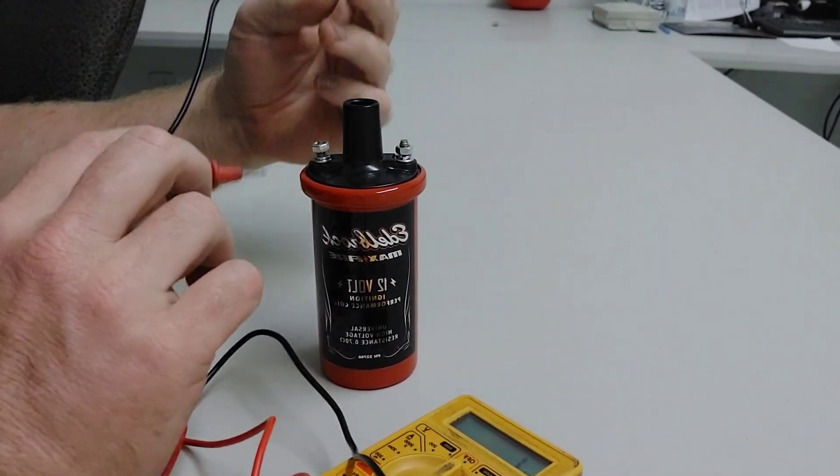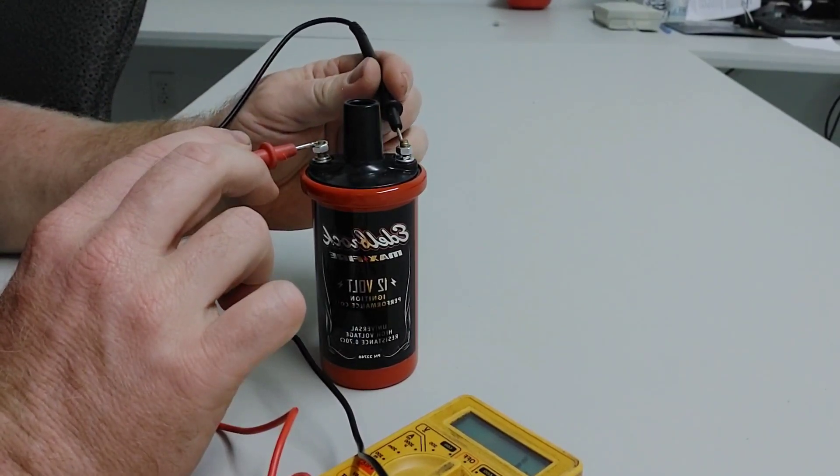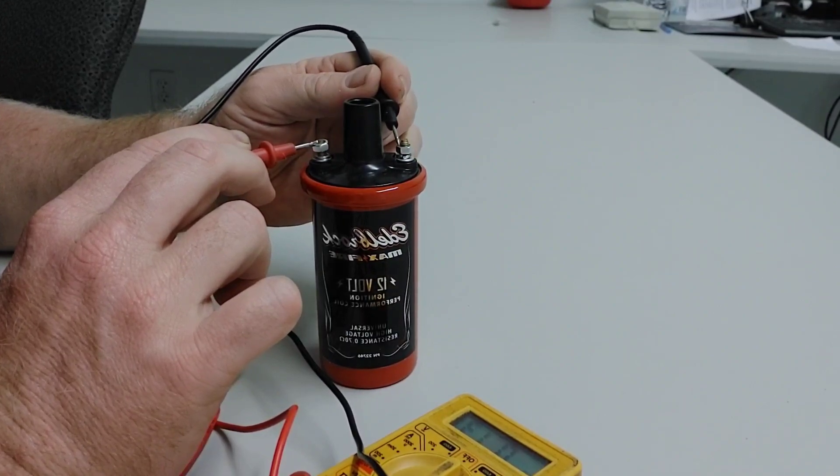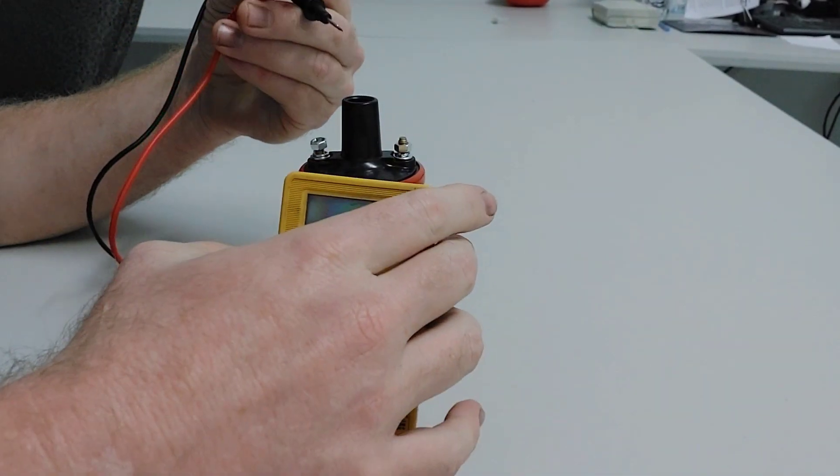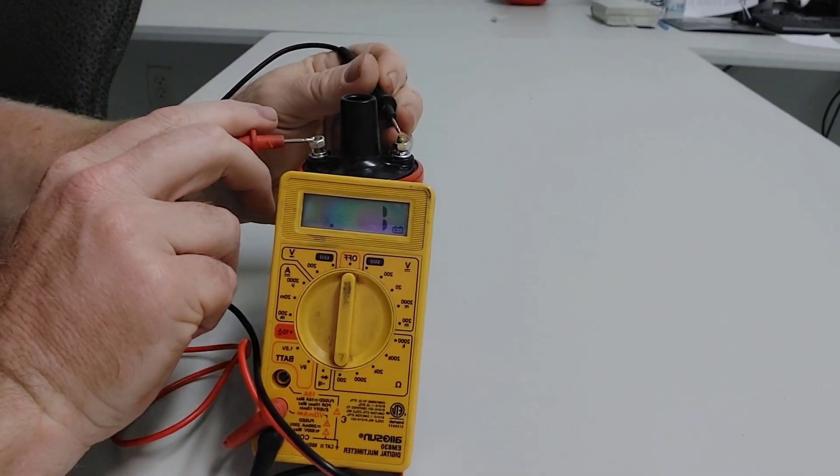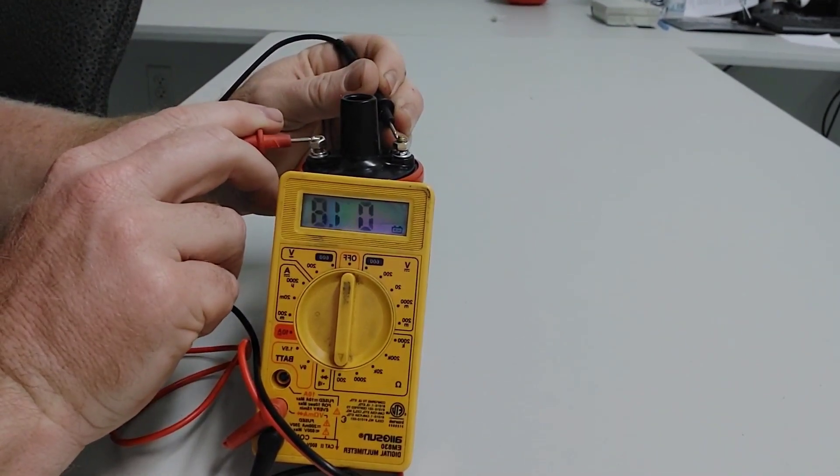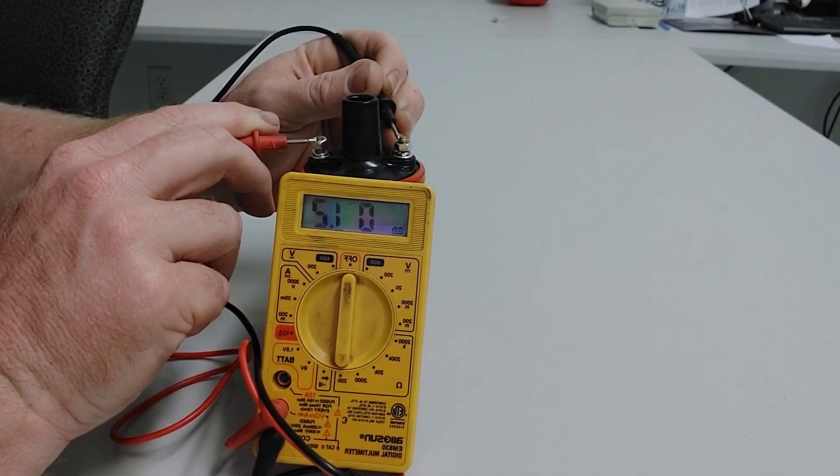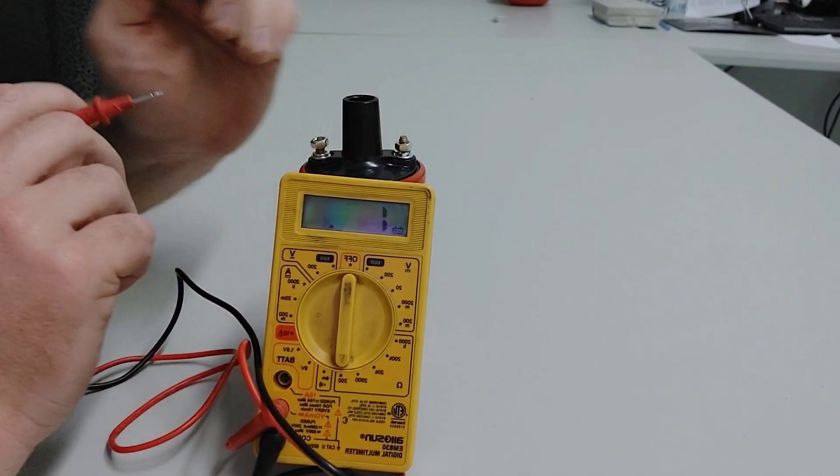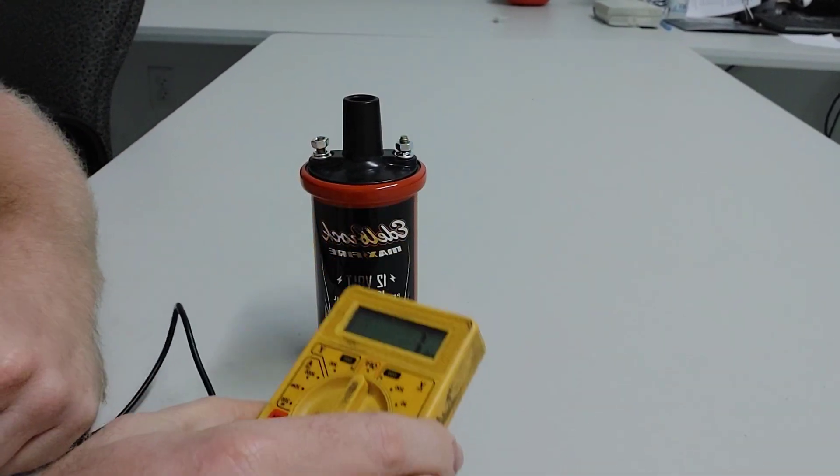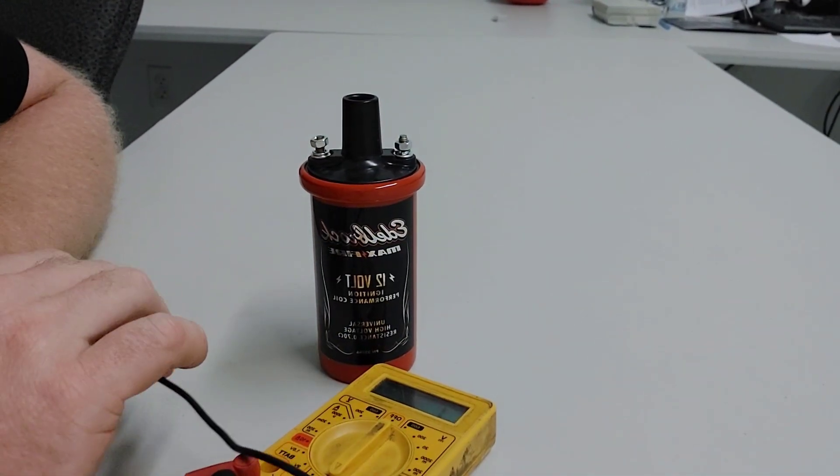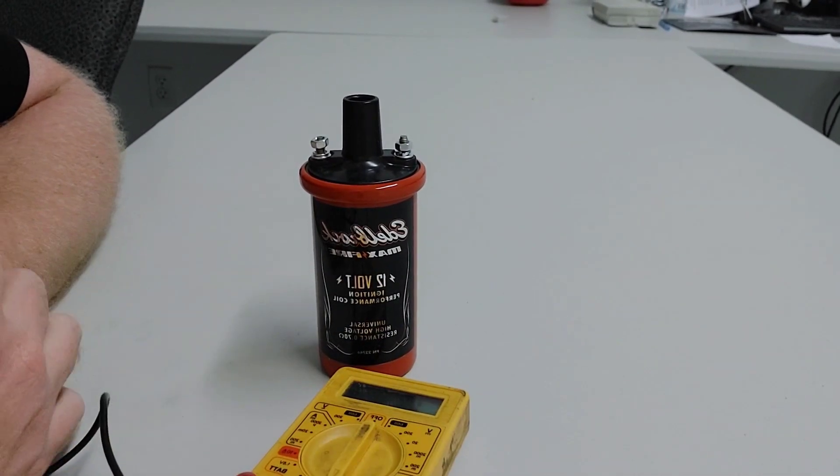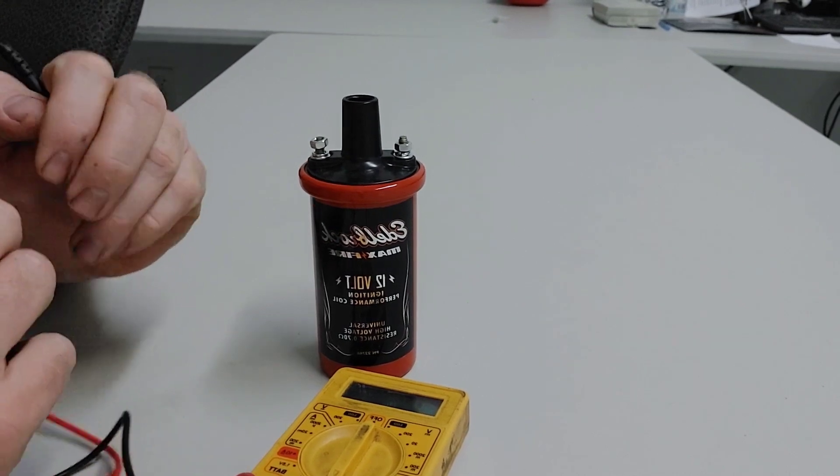You have your positive and negative terminals here, and on the coil it's showing 1.3. Let me stand this up so you can see it. So it's 1.3, which is actually about 1 ohm when you subtract the offset. It's a little bit higher than what the factory's calling for, but with standard deviation, you're within standards. I have the multimeter set to 200 ohms. That's your primary.